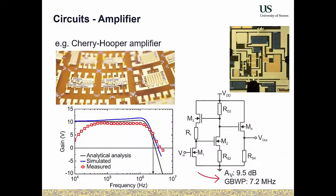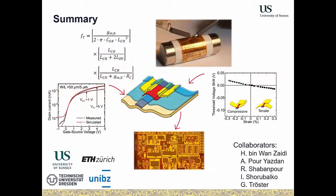Combining all this knowledge, we can fabricate useful circuits. One example optimized for sensor signal conditioning is a Cherry-Hopper amplifier providing good electrical performance with a gain-bandwidth product close to 10 MHz, operating while bent. The take-home message is that knowledge of both electrical and mechanical performance must be integrated for the design and operation of flexible circuits.